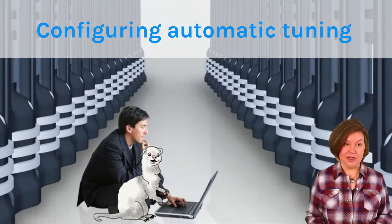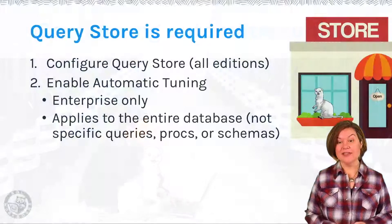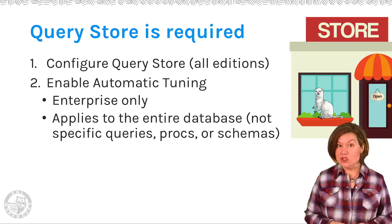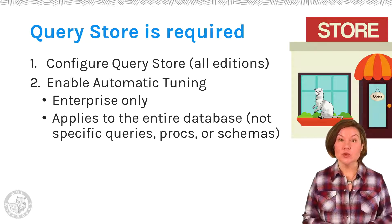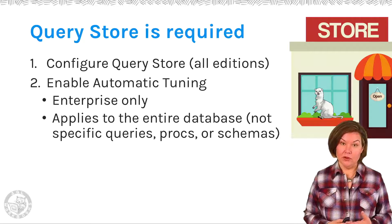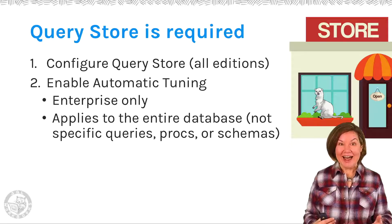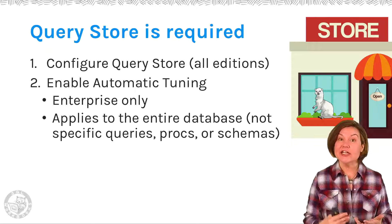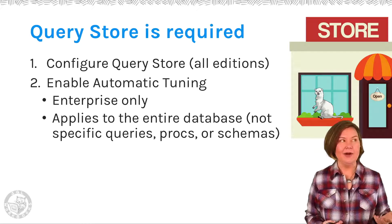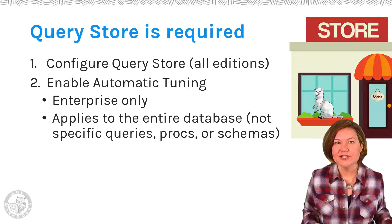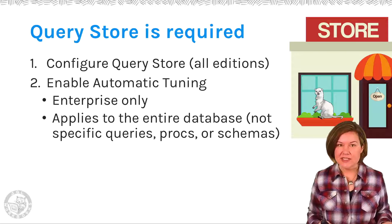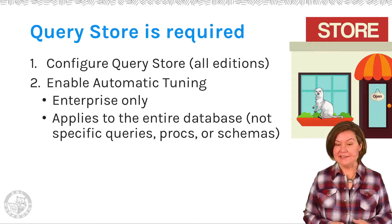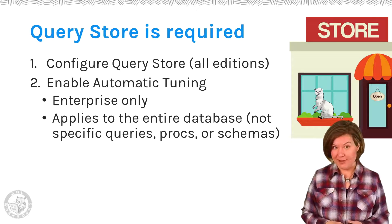So first up, how do I turn it on? It is not complicated at all. The first thing you need to know is that you must have the Query Store feature enabled. The plan correction relies on Query Store collecting plans and aggregate performance information — such as how much average CPU time a plan is using. So we have to have Query Store set up and collecting data first, then we enable automatic tuning.